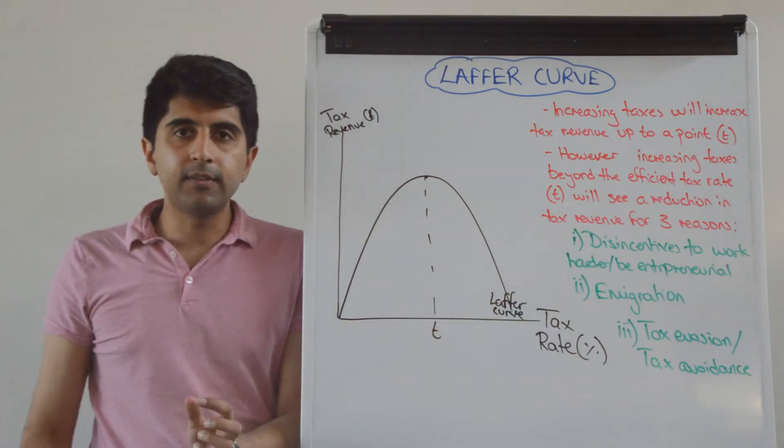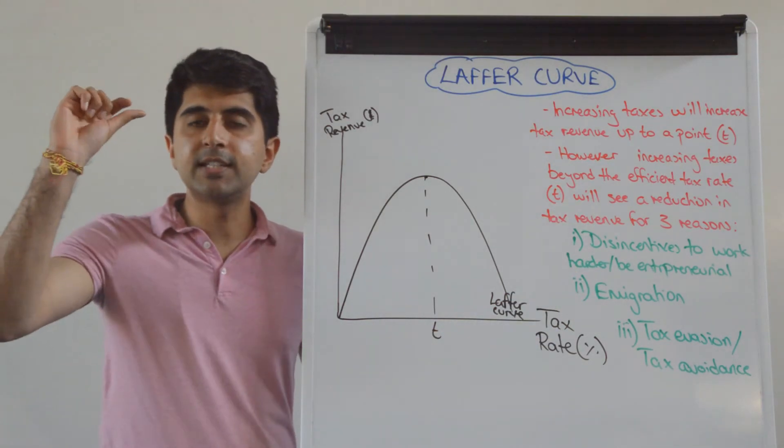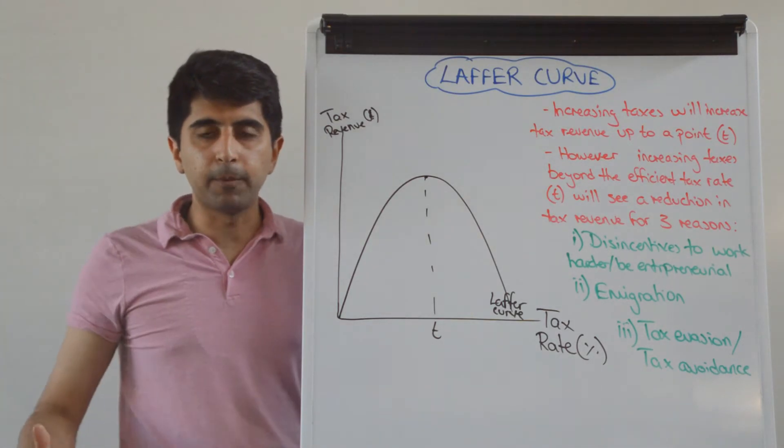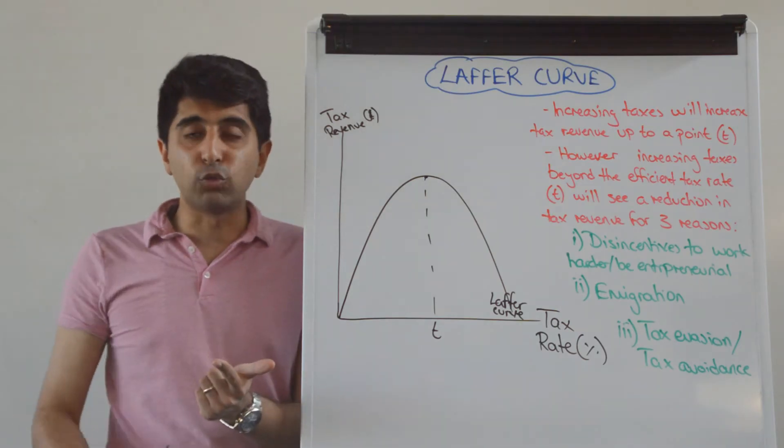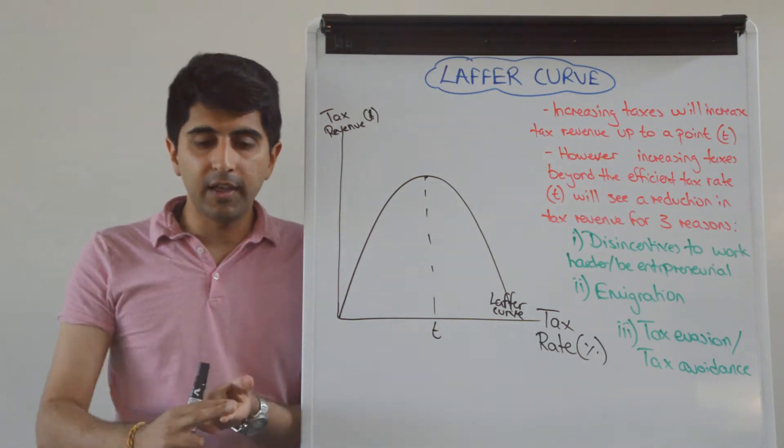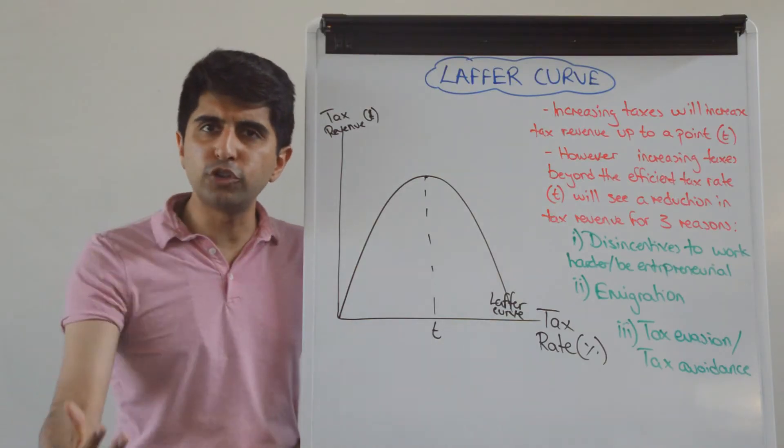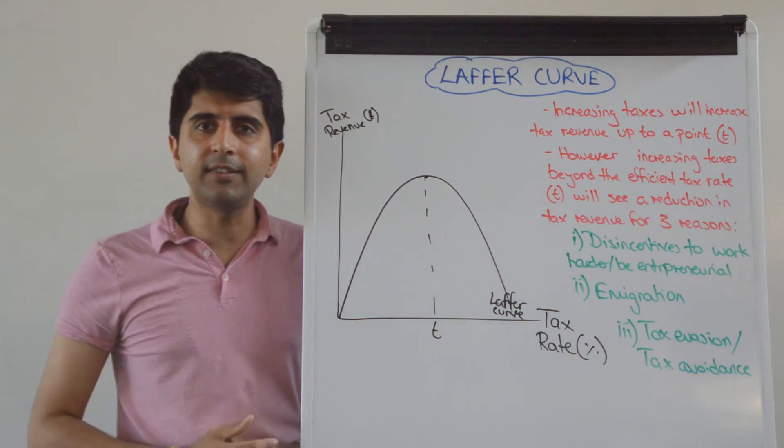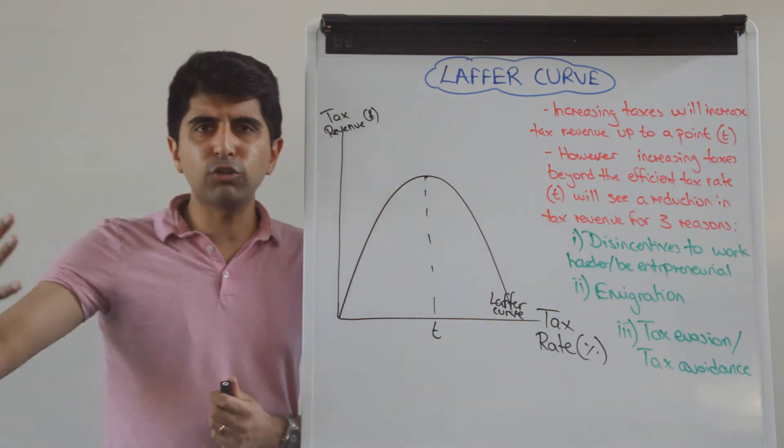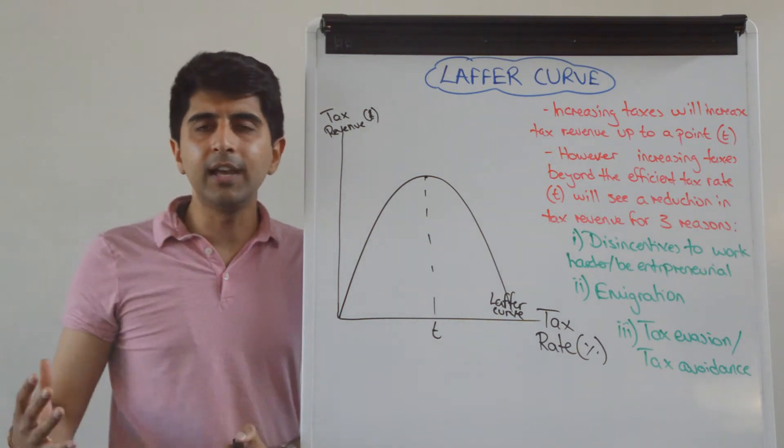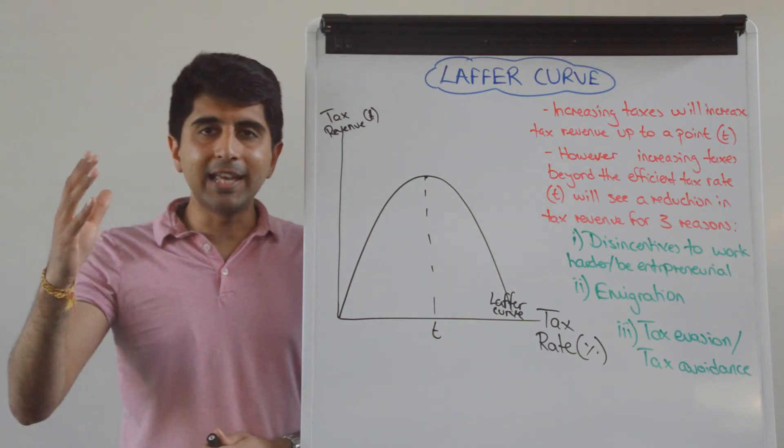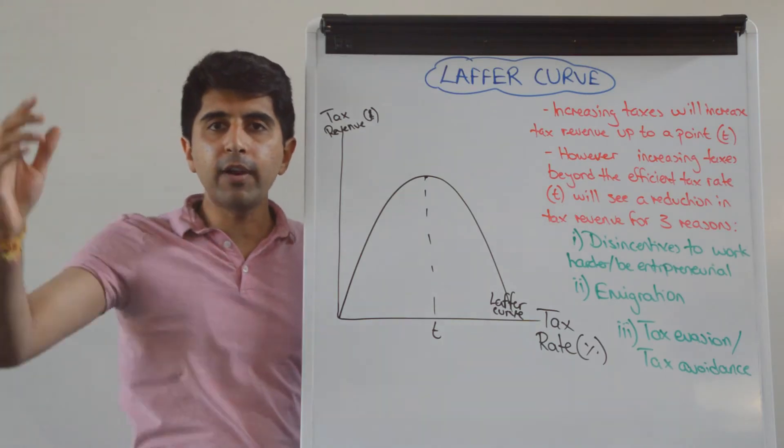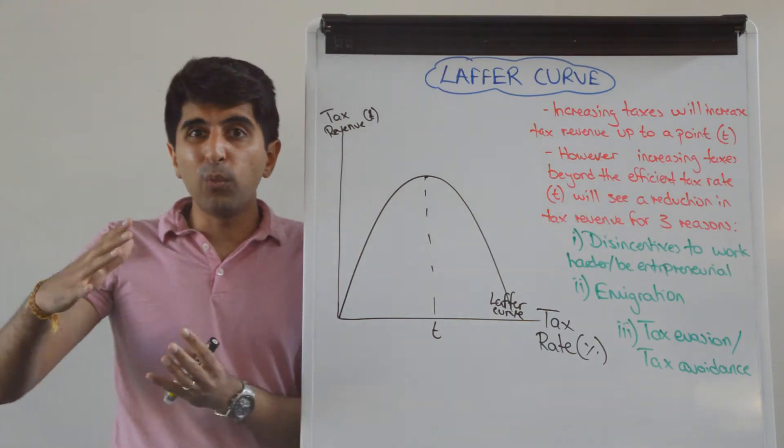One reason is because of the disincentives that higher tax rates bring. So a very, very high income tax rate on the rich, for example, will disincentivize working really, really hard. It will disincentivize being entrepreneurial. In fact, workers may start to substitute their work for leisure instead, realizing that working extra hours or working hard is pointless, considering how much that income is being taxed away.